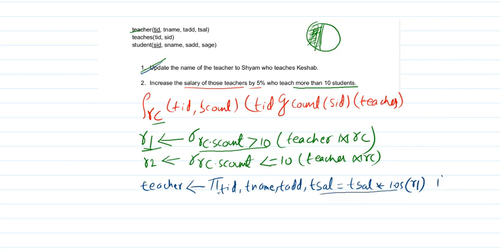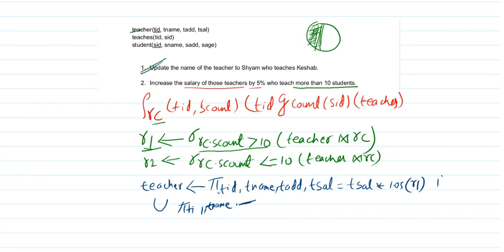Now the second half is unioned in — all attributes from r2, which contains the teachers who teach less than or equal to 10 students, are unioned together by tid and all remaining attributes. This completes our final query. I hope it helps — thank you.